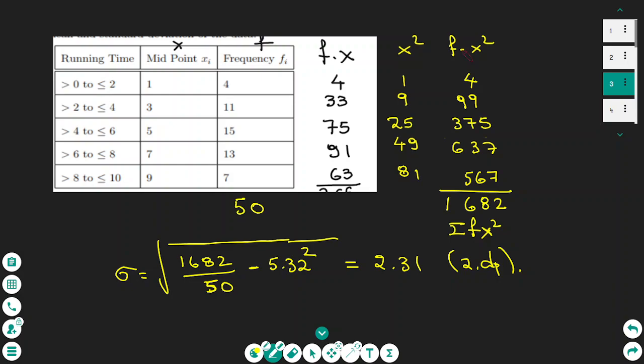I multiply the frequency by X squared and I have the numbers 4, 99, 375, 637, 567, and the sum is 1682.